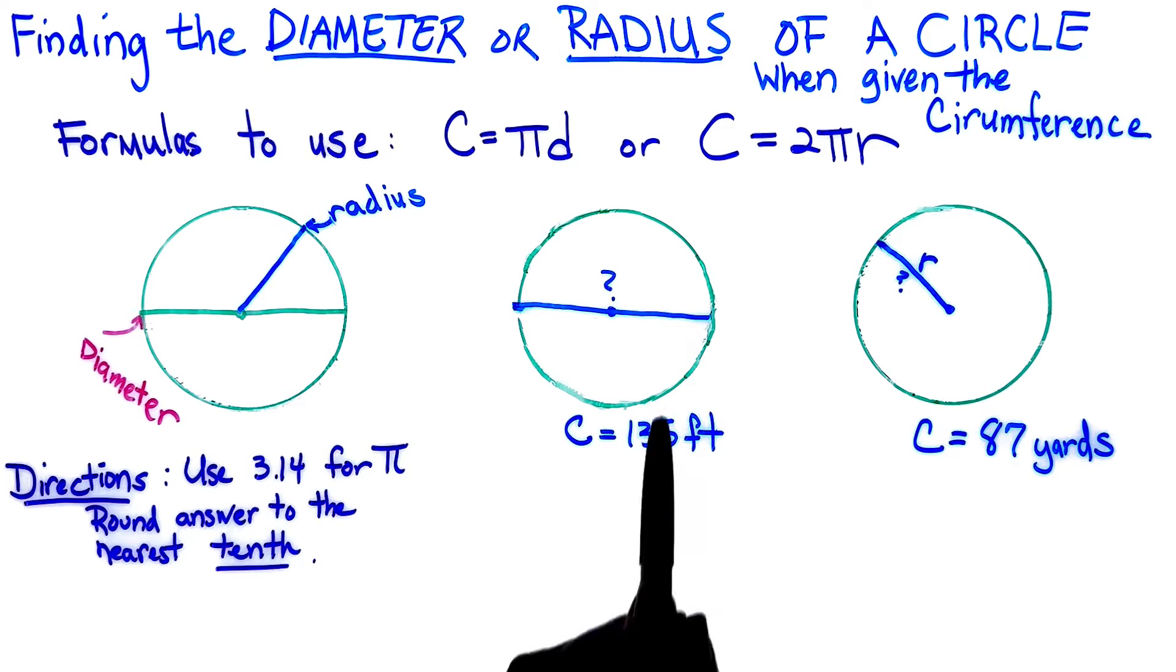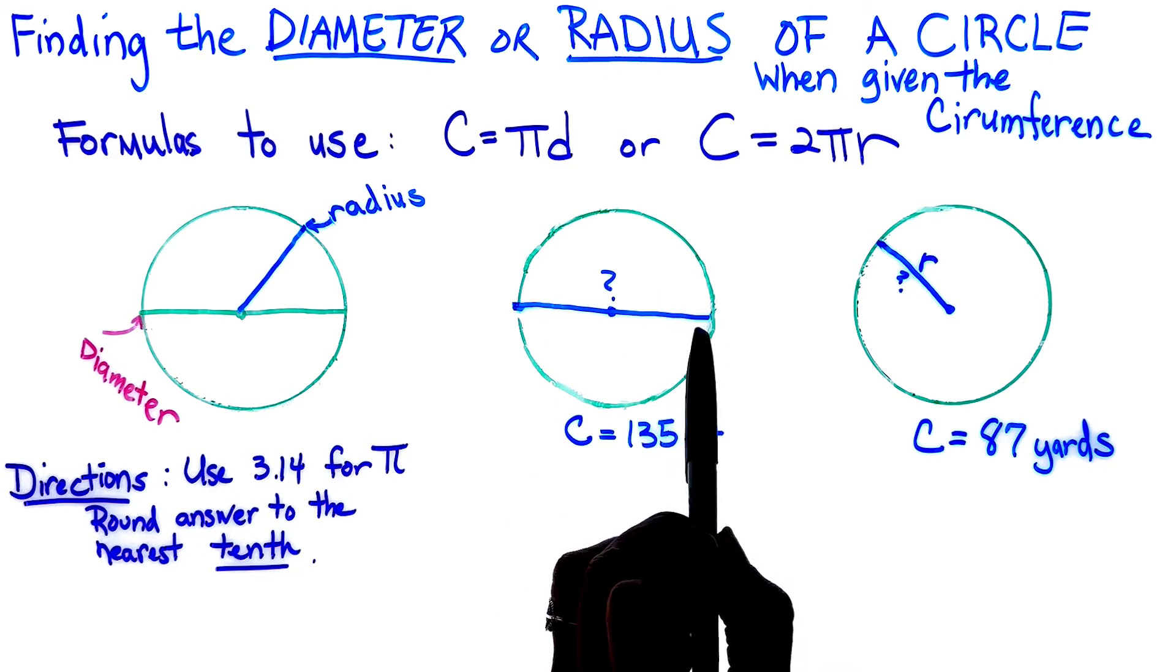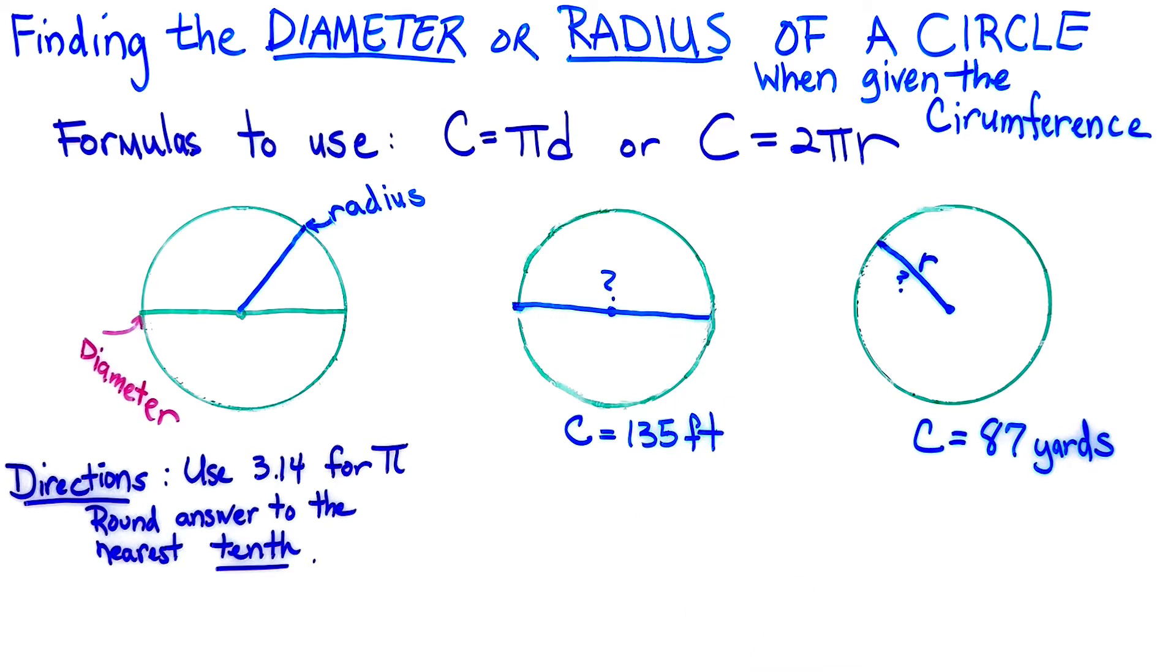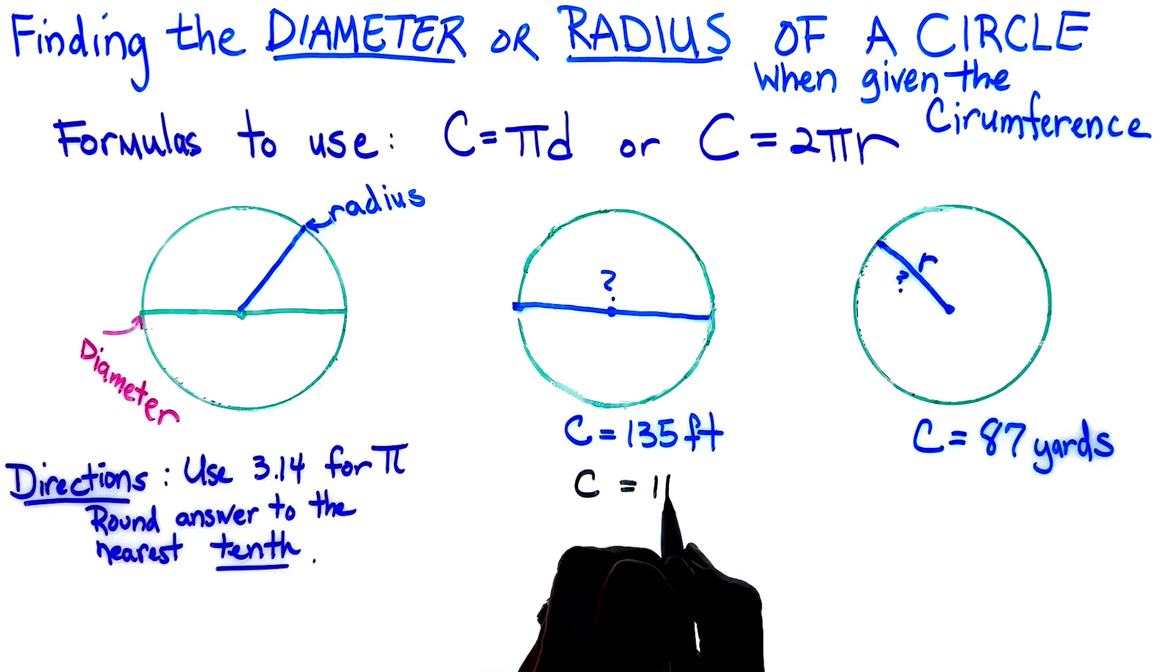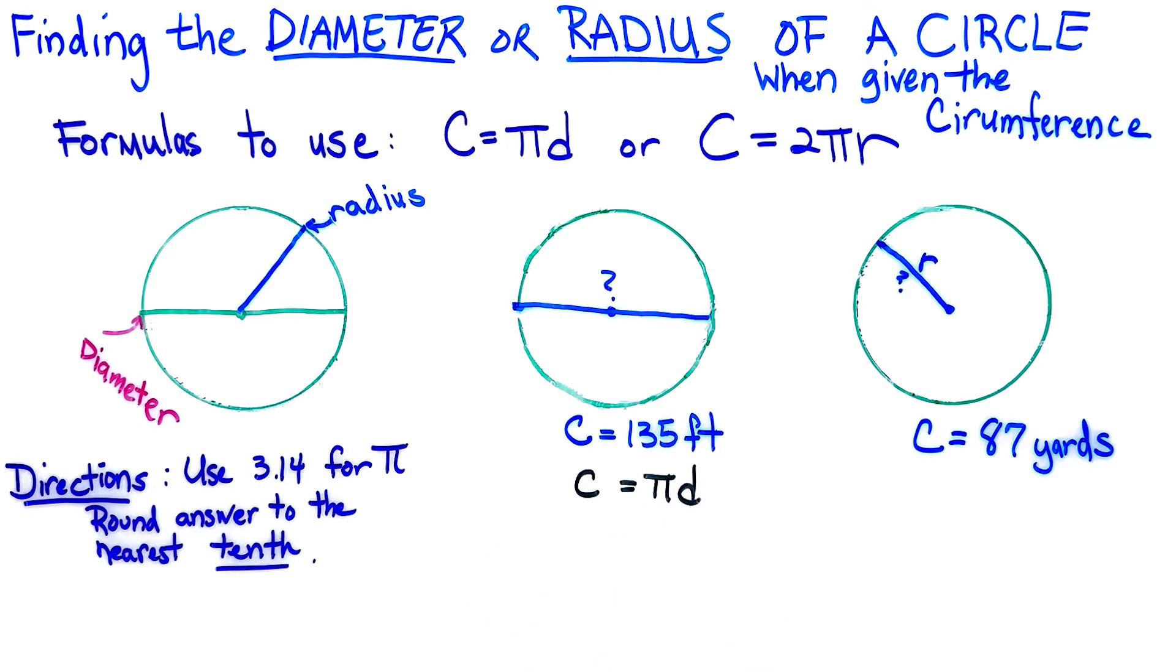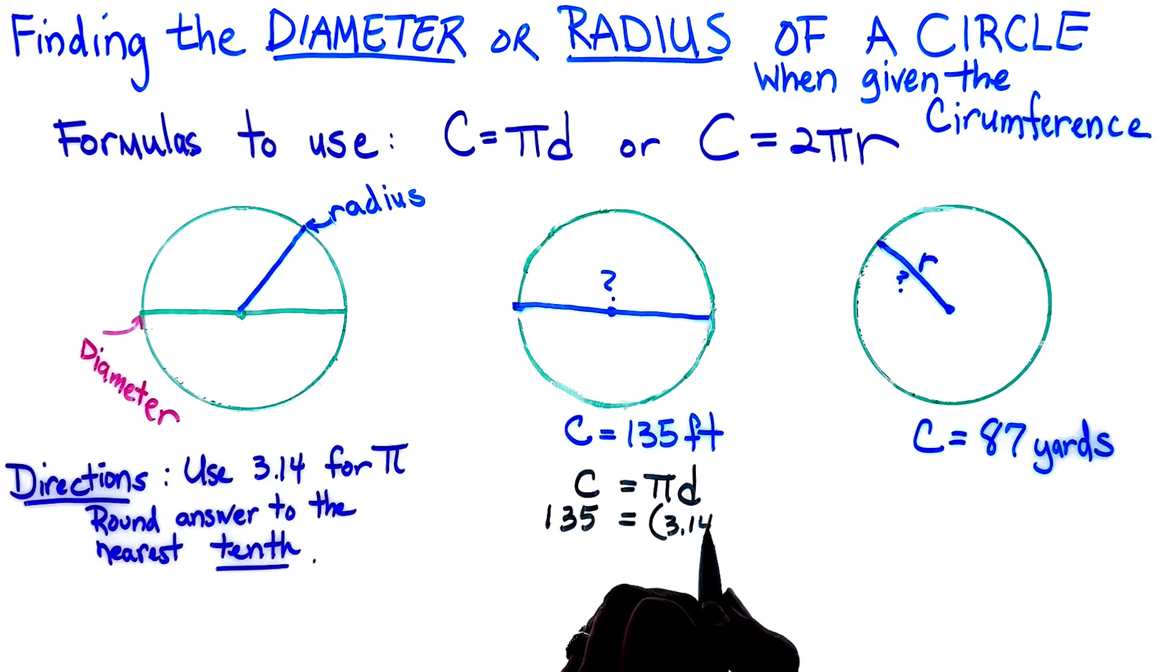I'm going to look at my circle and I see a diameter is actually missing, so I'm going to use the formula C equals pi D. Now I know they gave me the circumference, so I'm putting 135 in where my C is because that's what circumference stands for. I'm writing 3.14 here because that's what they told me to use for pi, and then I'm leaving my D there.